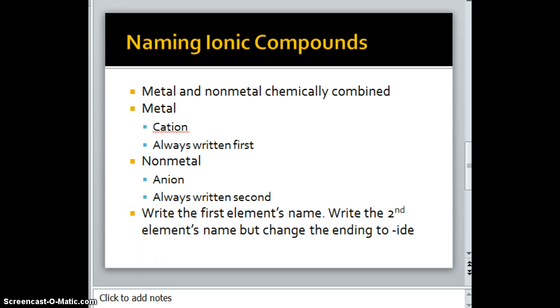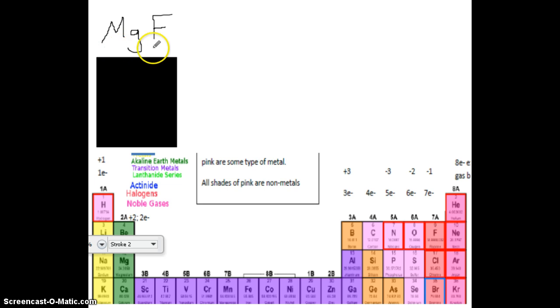Let's practice. Look at our first example, Mg and F. Let's make it into a chemical compound first. Mg is in group 2, so what is its charge? Its charge is plus 2 because it's going to lose 2 electrons. F, fluorine, is in group 7A with 7 valence electrons. So what's it going to do? It's going to gain 1.